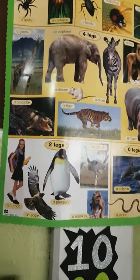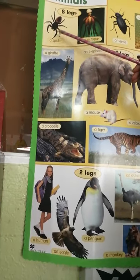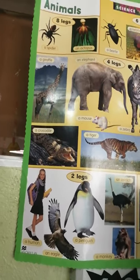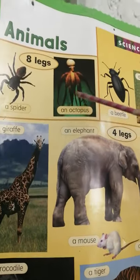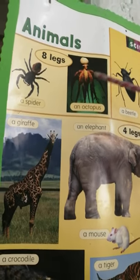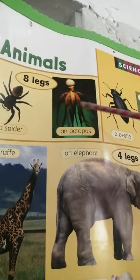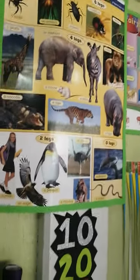Let's count the spider legs: one, two, three, four, five, six, seven, eight — eight legs! And an octopus — look: one, two, three, four, five, six, seven, and eight. Yes, eight legs. Very good, kids.